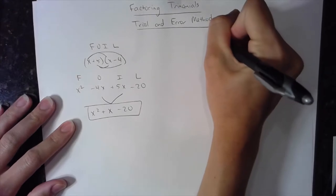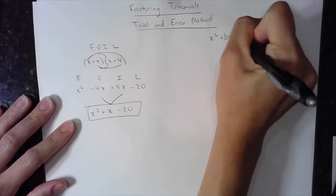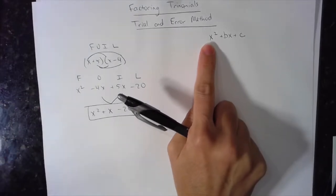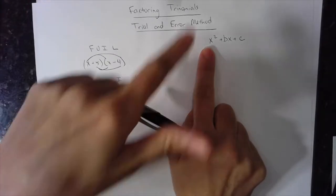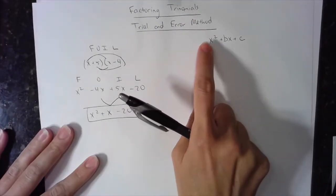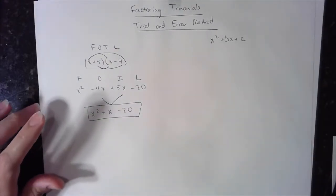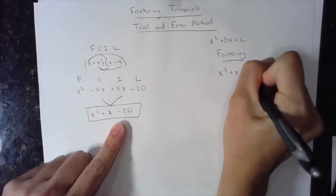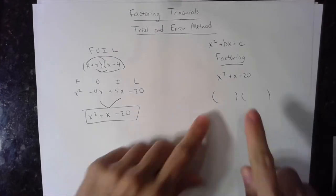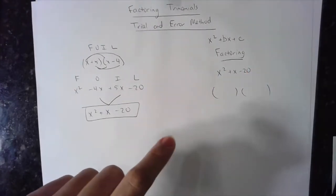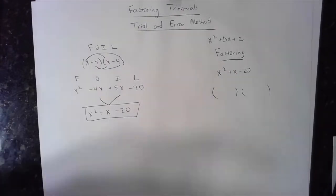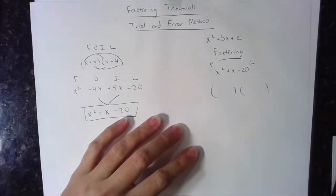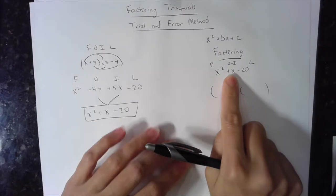This video is specific to trinomials of the form x squared plus bx plus c, where the coefficient in front of x squared is just one — the easier cases. The same concept applies for other cases, which I'll cover in a separate video. Factoring means going from the trinomial into what I call the bubbles — finding the two binomials that multiply to give that trinomial. The first part of the trinomial comes from the first part of FOIL, the last from the last, and the middle from outer and inner combining.